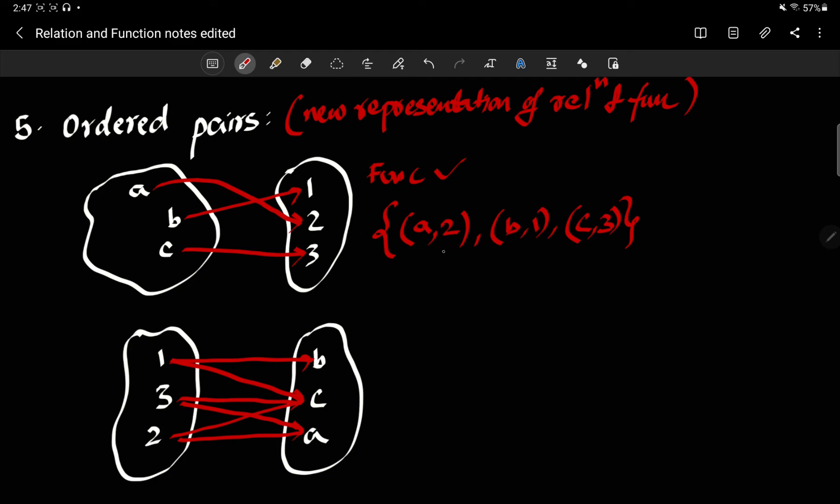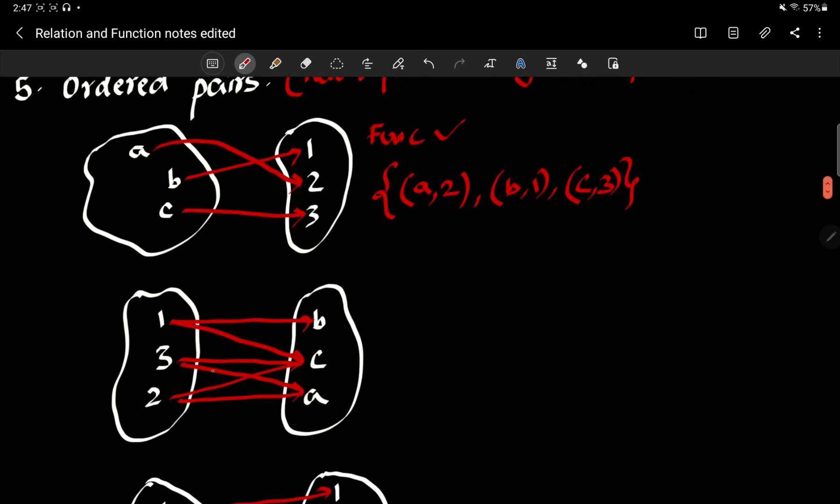So this is another way of writing the function. This is an ordered pair, meaning a comma two means something else than two comma a. Now if I go in here, the second example, this is no longer a function. This is just a relation. But we can still have ordered pairs. One b, one c. So in this case, you're going to list all possible lines, terminals. Three c, three, three a, two c, two a.